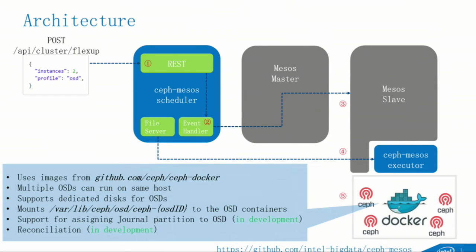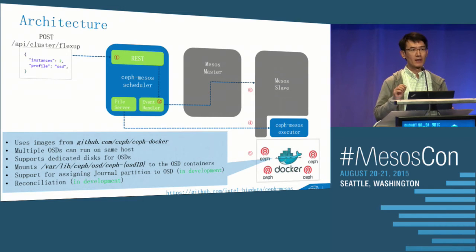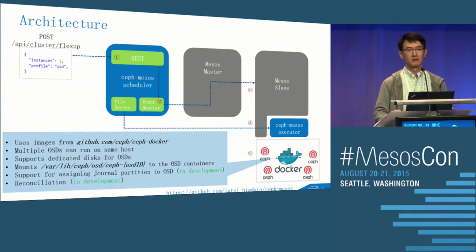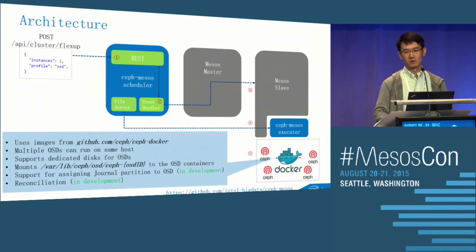This means the data replication policy can be executed correctly — different copies of the same data will not be located on the same physical machine. That's exactly the way a native Ceph cluster works.